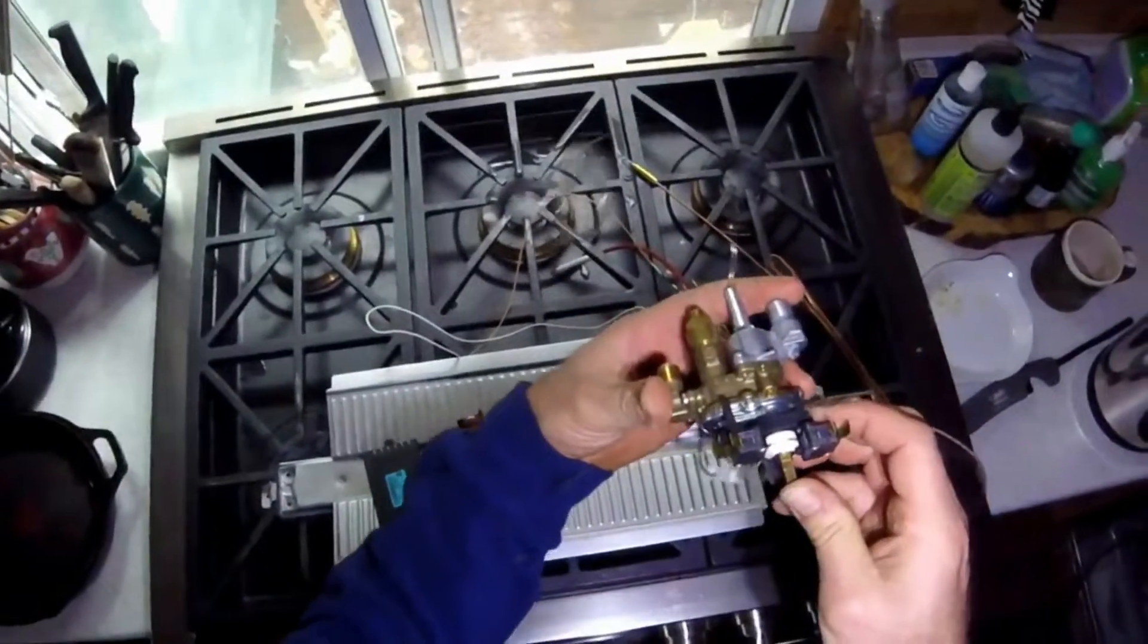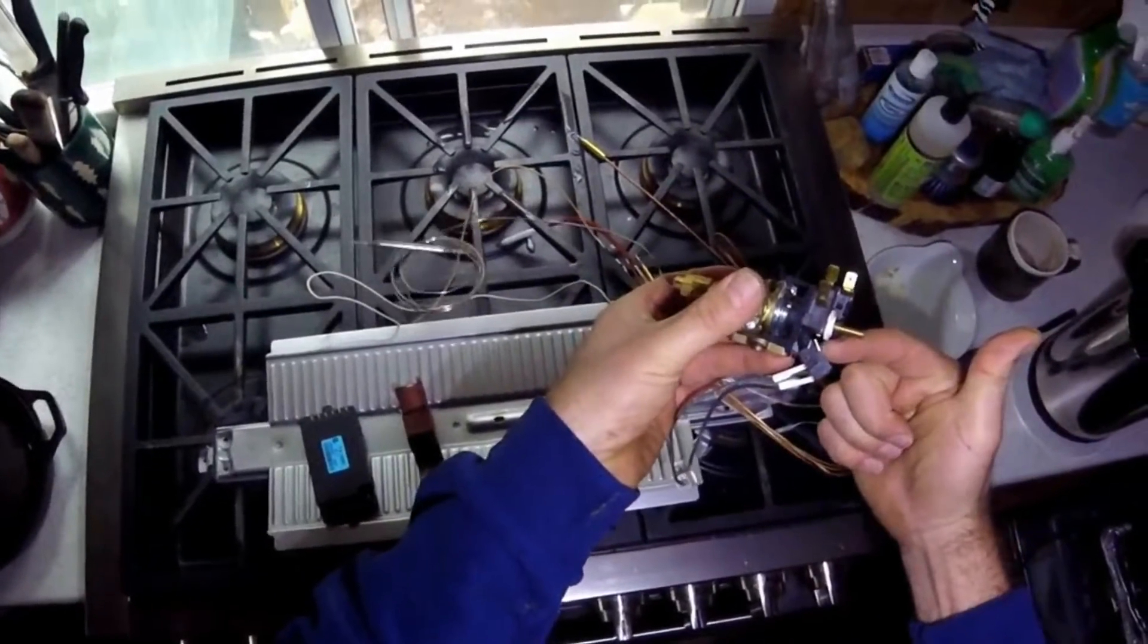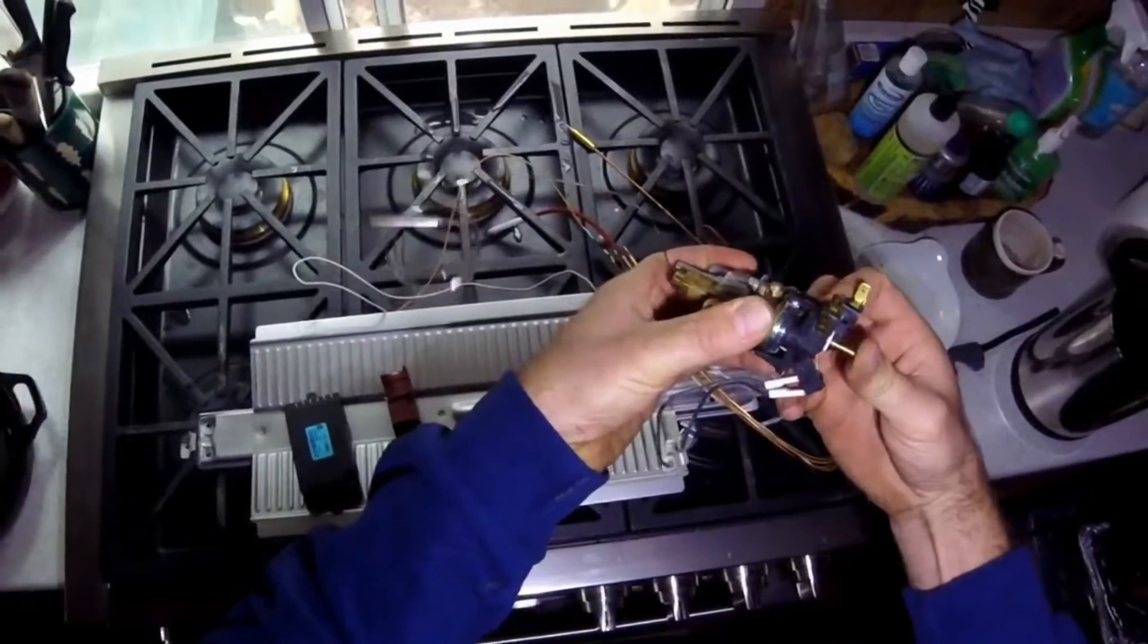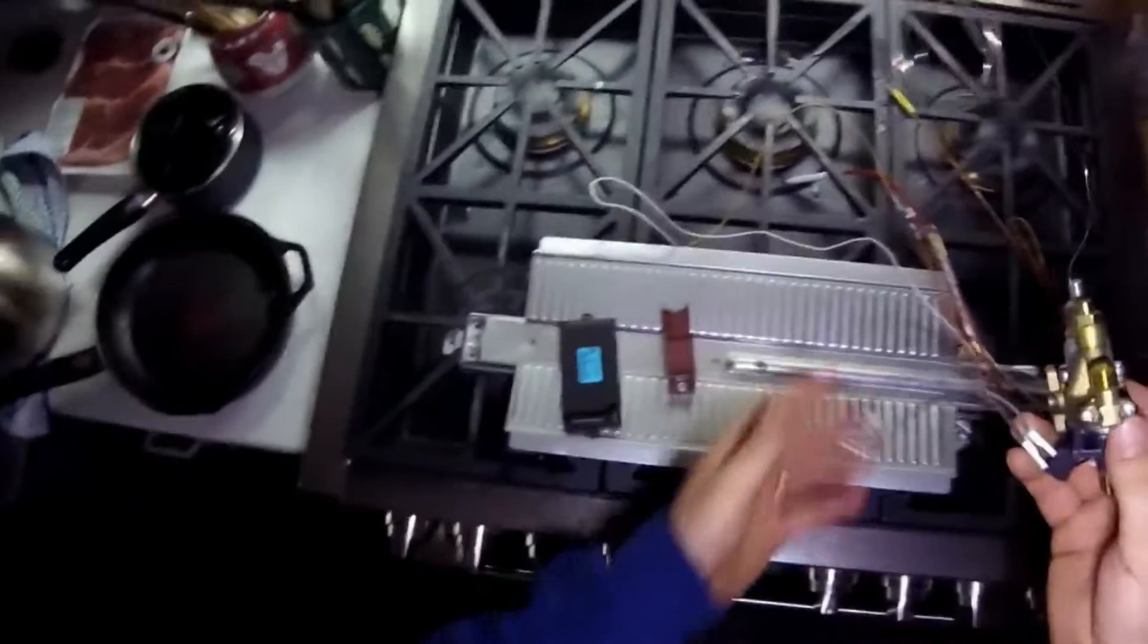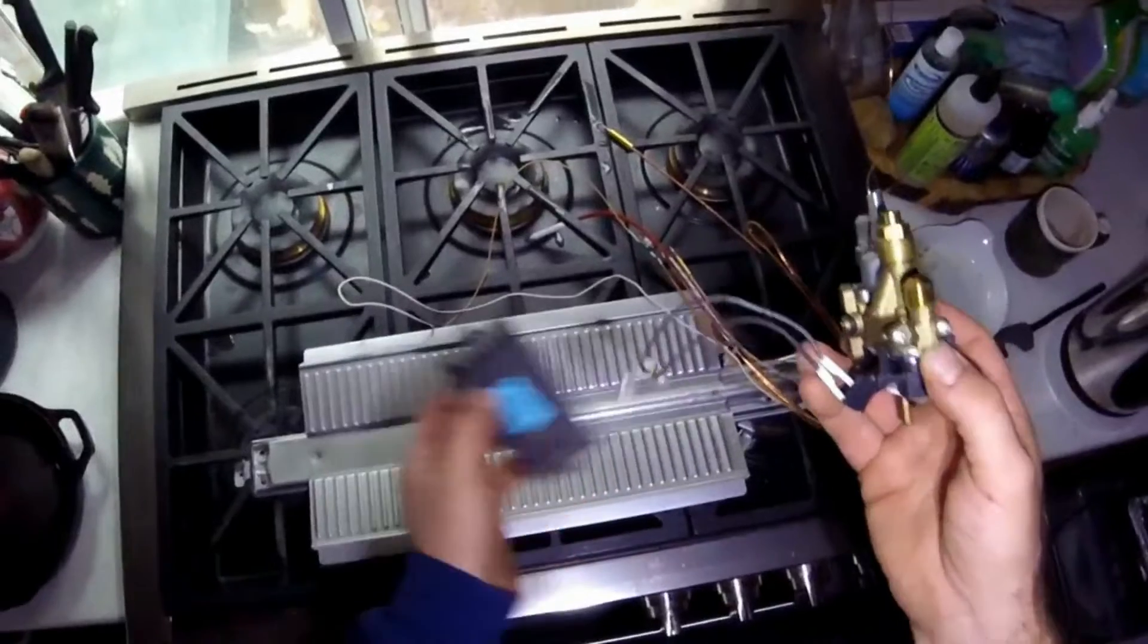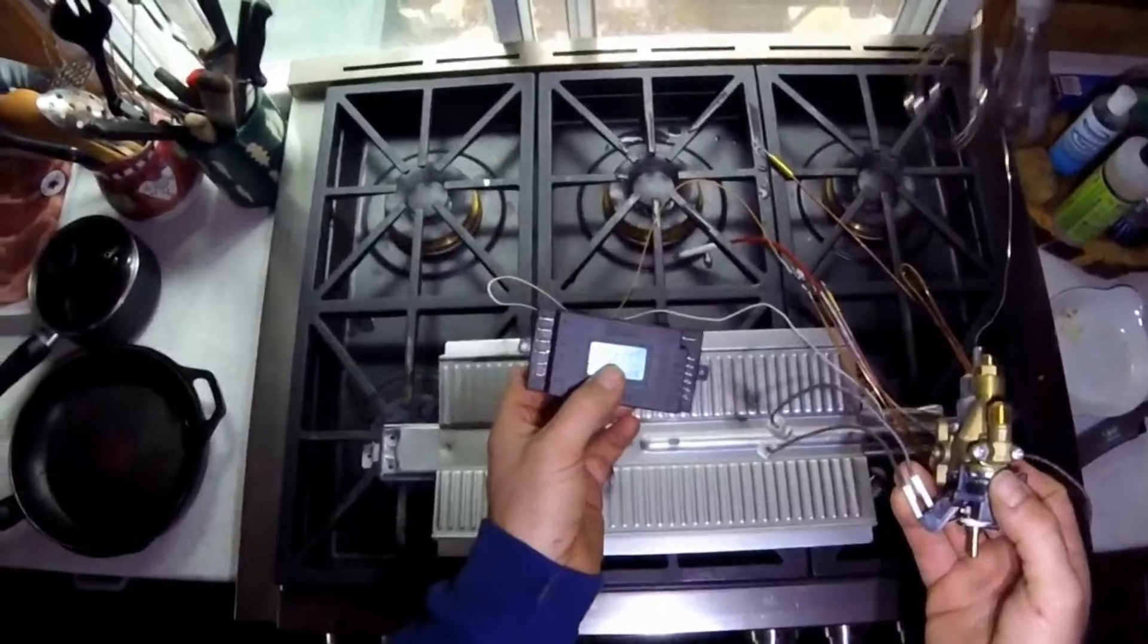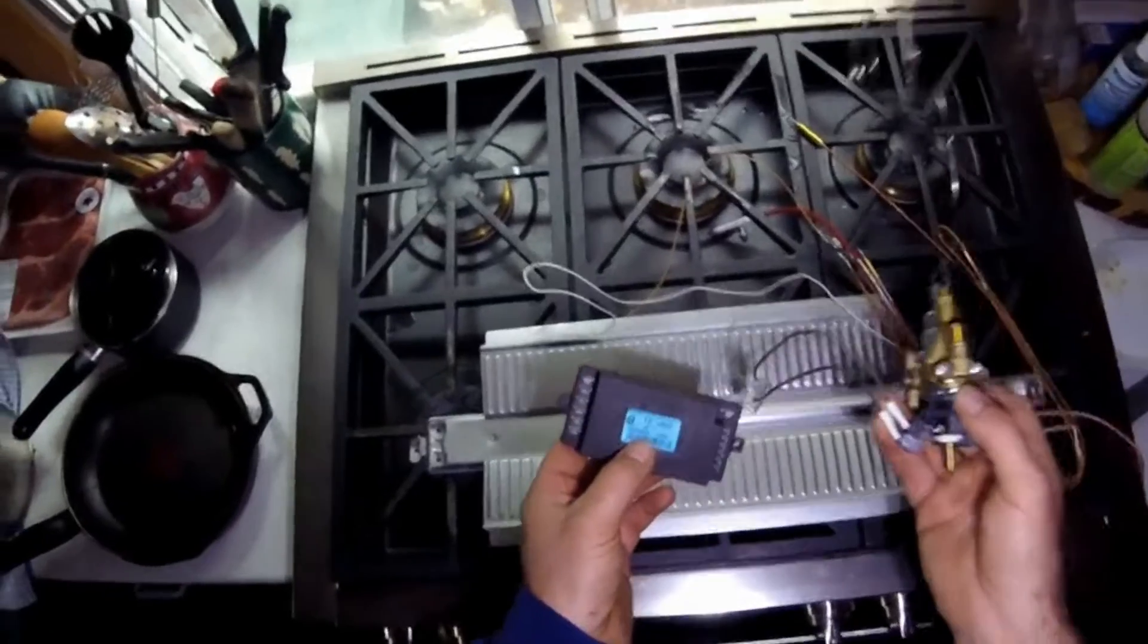When you initially push in the knob for that three seconds, what you're doing is essentially pressing in this switch inside, just like that. And what you're doing is then sending a signal to this T0 module. And inside this T0 module is basically a capacitor. So when you push in the knob, you're charging the capacitor in here, and that capacitor will dissipate for seven to nine seconds, as we saw earlier in the demonstration of how to ignite.